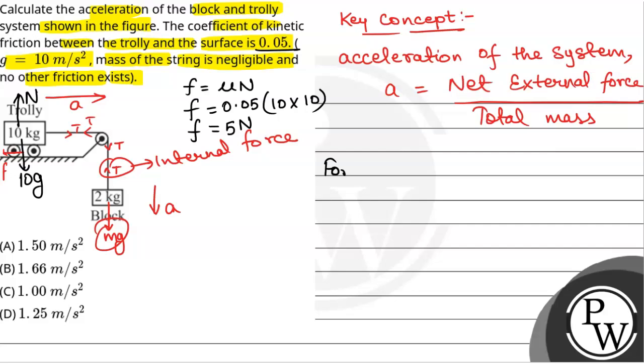Now we will see for block we have to find the acceleration of system. So acceleration of system that will be equal to net external force. Now net external force is weight of block, that is 2g, 2 into 10, minus frictional force that is 5, divided by total mass that is 12. So this will be equal to 15 by 12, which will be equal to 1.25 meter per second square.